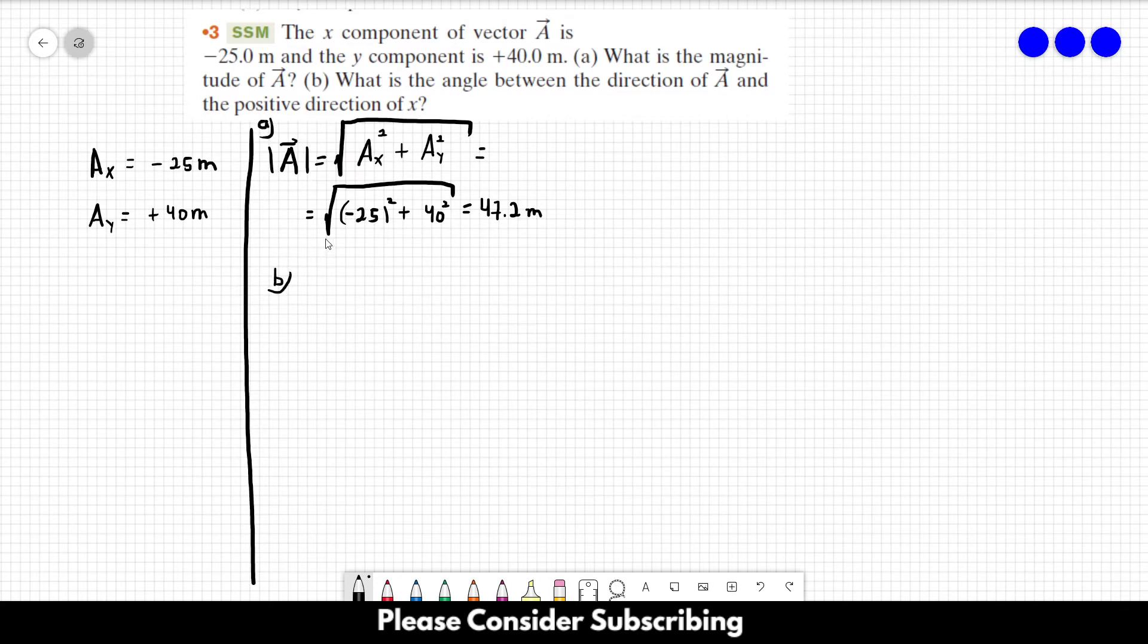Letter B, what is the angle between the vector A and the positive direction of x? So, let's remember that the tangent of the angle is equal to the y component over the x component.